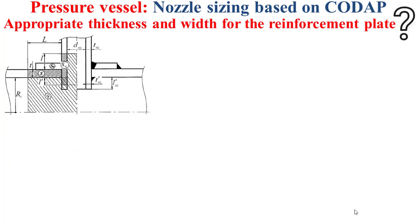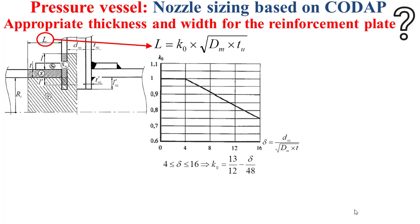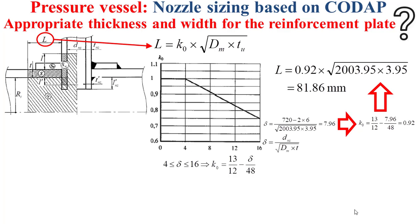Now we have to determine capital L — the length of the portion of the shell participating in the neighborhood of the opening. This length capital L is determined by the formula I explained in a previous video, and K0 is determined based on a chart. Here delta will be equal to 7.96 and K0 will be equal to 0.92, so the length capital L is equal to 81.86 millimeters.